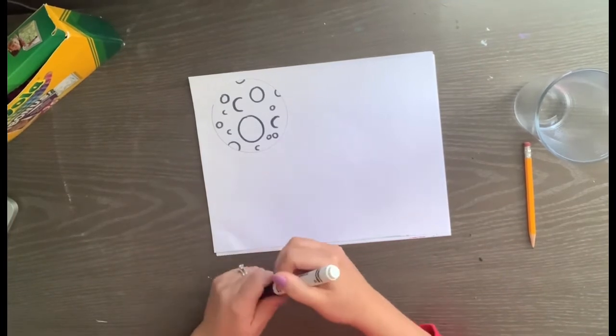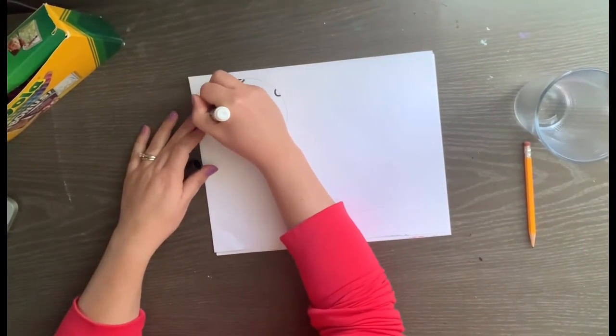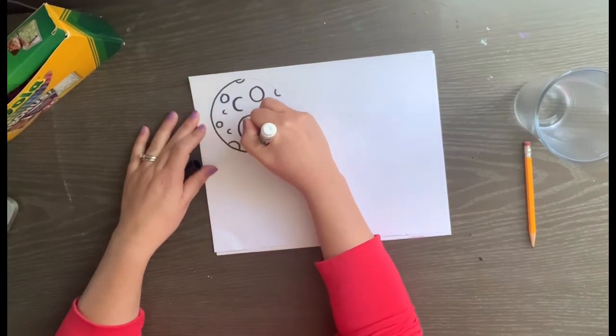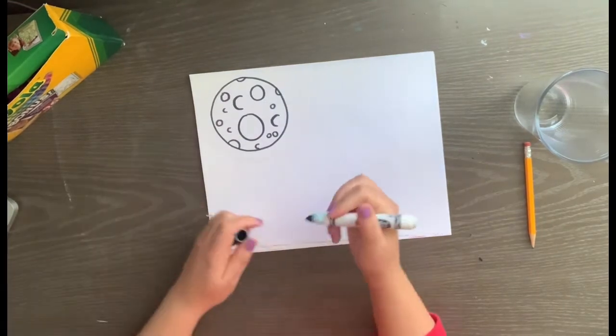We're gonna come back to the moon here in a little bit. In fact, I think I'll outline this. As I was drawing, I was using a washable marker because we're going to make it look a little more realistic later on.